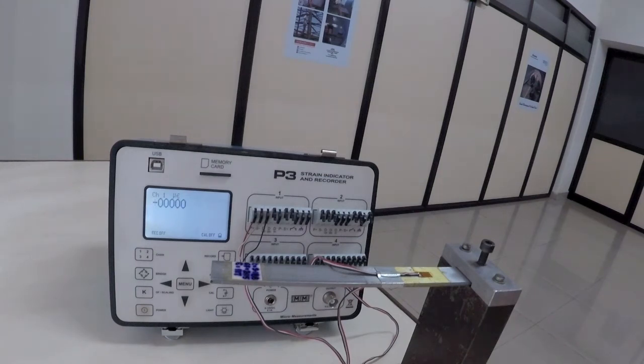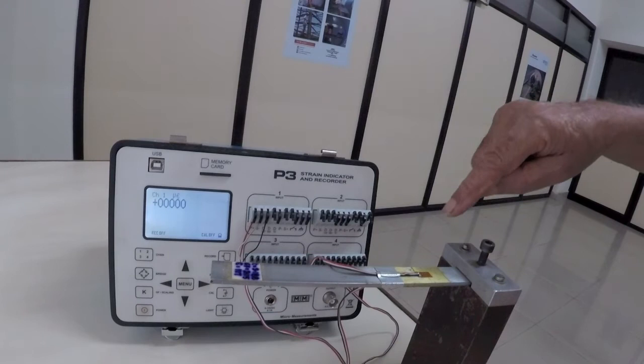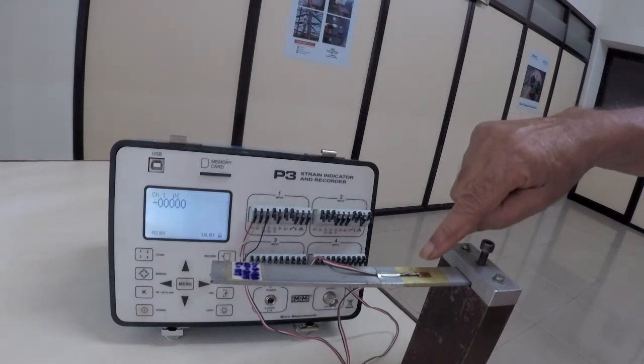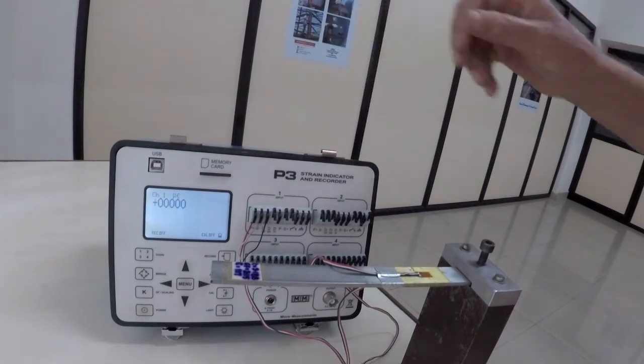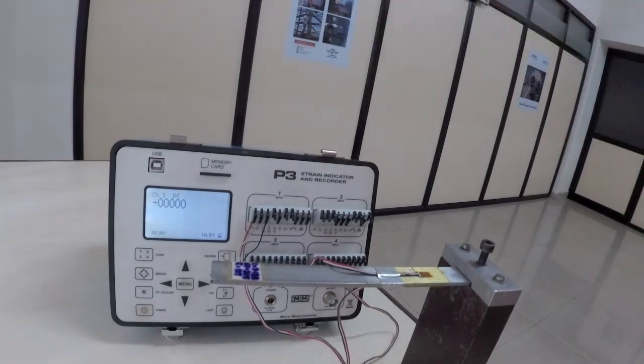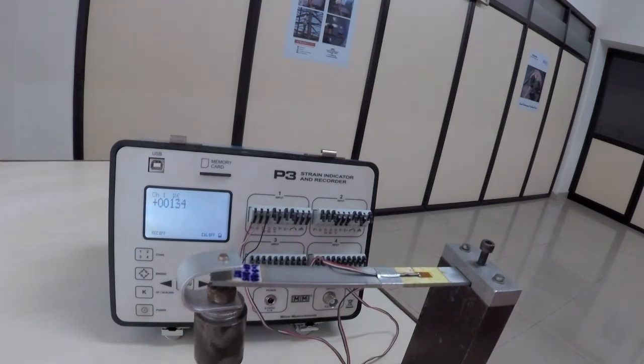Practical example: one gauge on the top surface of a cantilever beam is connected to a Micro-Measurements model P3 strain indicator as a quarter bridge. The instrument completes the bridge internally with high precision resistors, and when the beam is loaded, it displays the output from the strain gauge directly in terms of microstrain.